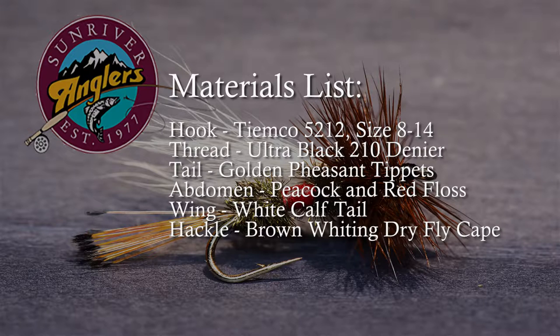For a hook we're going to use a TMCO 5212. You can go size 8 to 14. It is a 2x long 1x light dry fly hook that's great for larger flies like this. For the thread, an ultra black 210 denier on this fly. As you go down in size I would target going a lighter denier like 70 denier.